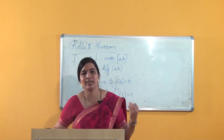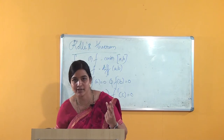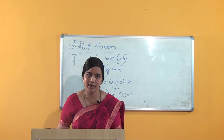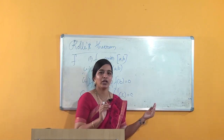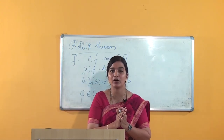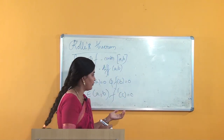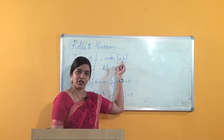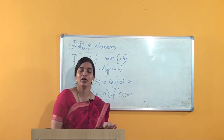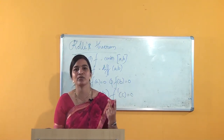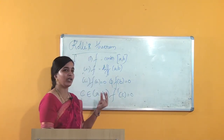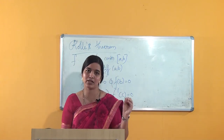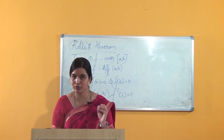In the previous class, we discussed two cases. Case 1: if f(x) = 0 for all x, we proved we can find a point c in the open interval (a, b) such that f'(c) = 0. We got that because f is continuous and differentiable, and using those conditions along with the third condition, we can find such a c.